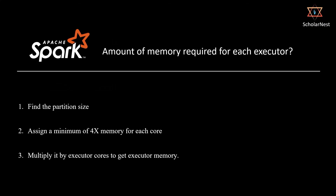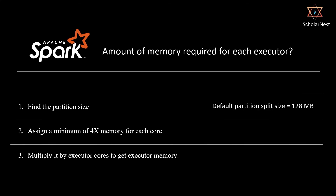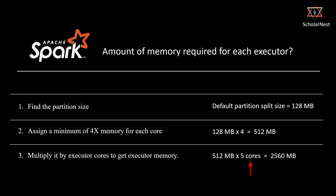Here is the roadmap for memory calculation: find the partition size, assign a minimum of 4x memory for each core, then multiply by executor cores to get executor memory. We know the default partition size is 128 MB. Multiplying by 4 gives 512 MB of memory required per core. With 5 cores per executor, multiplying 512 MB by 5 gives 2,560 MB — the recommended minimum memory per executor. We can round that to the nearest GB and assign 3 GB of memory per executor.